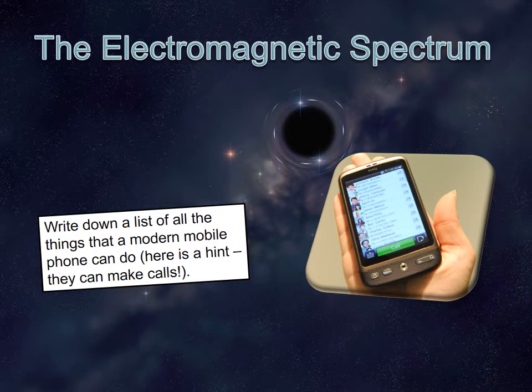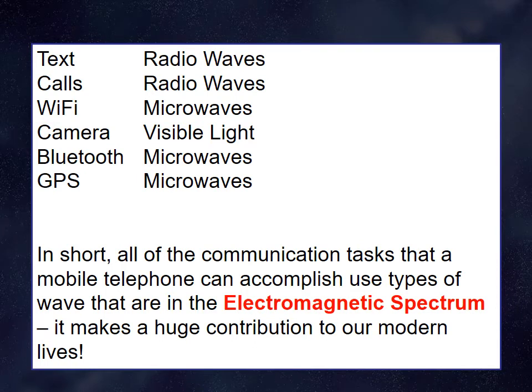Looking at the electromagnetic spectrum — we all use mobile phones. Write down a list of all the things your modern mobile phone can do. Here's a hint: they also make phone calls! Text messaging and calls require radio waves. Wi-Fi involves microwaves. The camera involves visible light. Bluetooth involves microwaves, and GPS — which tells people where your phone is, used for Google Maps — also uses microwaves.